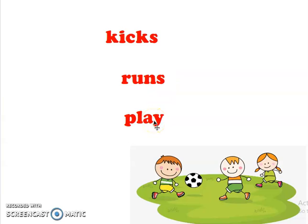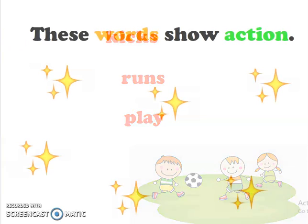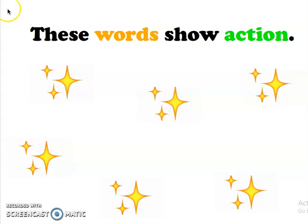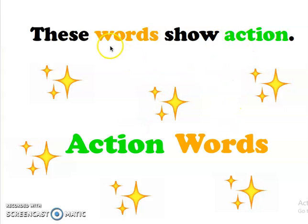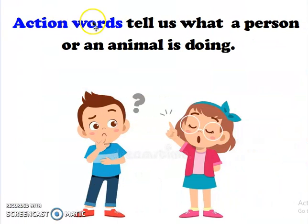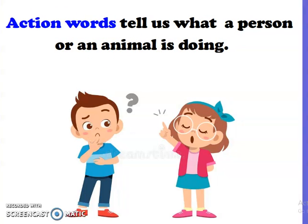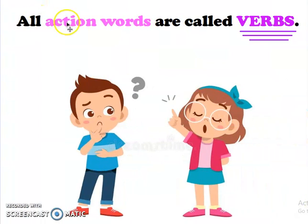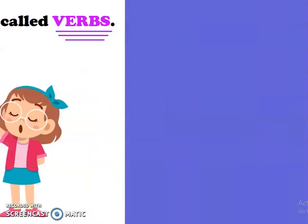If you noticed in the sentences we have just read, there are some words written in red color. Let's take a good look at these words. We have kicks, runs, and play. These words can show us how active these football players are. Since these words show action, we are going to call them action words. Action words tell us what a person or an animal is doing. All action words are called verbs.